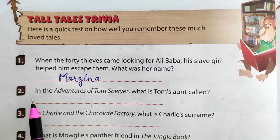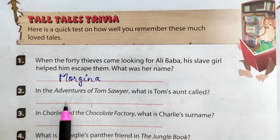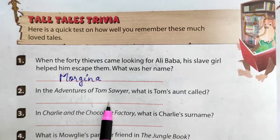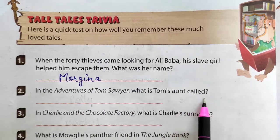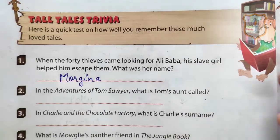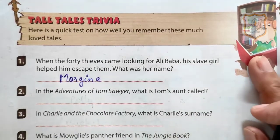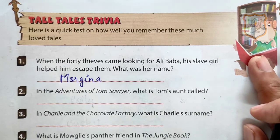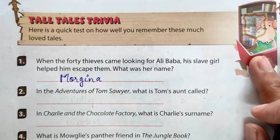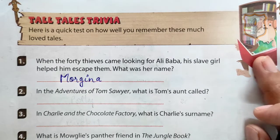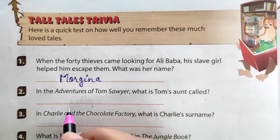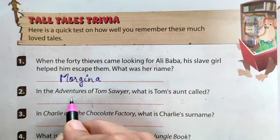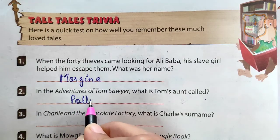Second: in the Adventures of Tom Sawyer, what is Tom's aunt called? In the story of Adventures of Tom Sawyer, the name of Tom's aunt was Polly.